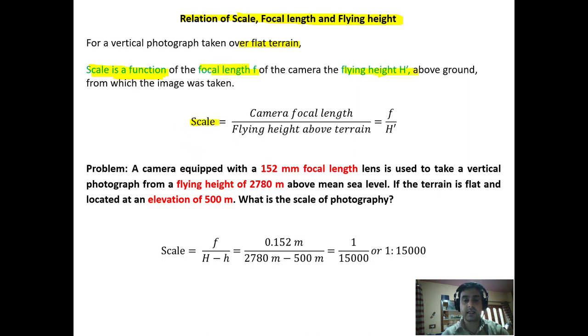There is a relation between them: scale is equal to camera focal length upon flying height, that means f upon h dash.